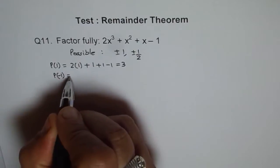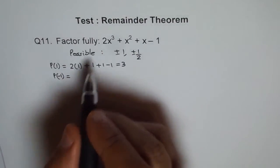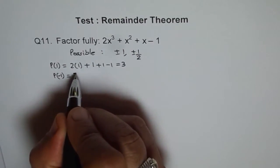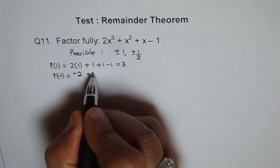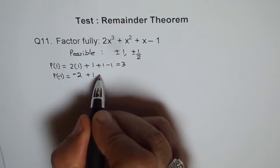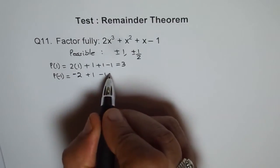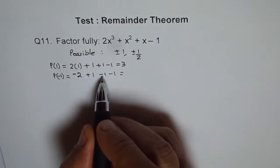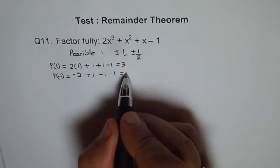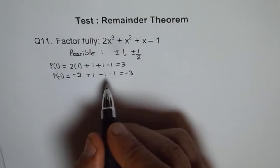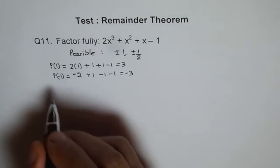Minus 1. So -1 will give me -2 here. And -1 will become -1 and -1. So -1 - 1 is -2. -2 + 1 is -1 and then I get -3. So that is also not a factor. Let's try 1/2.